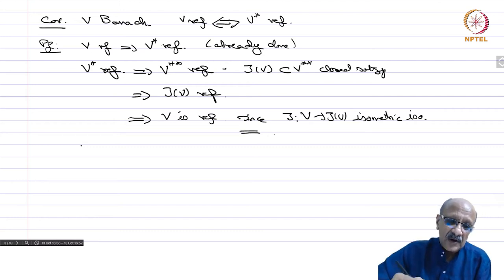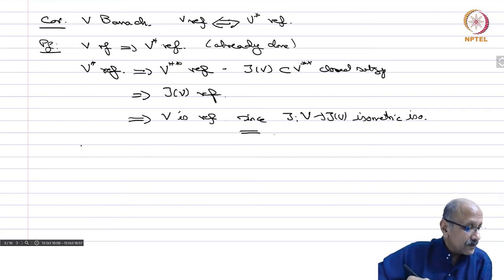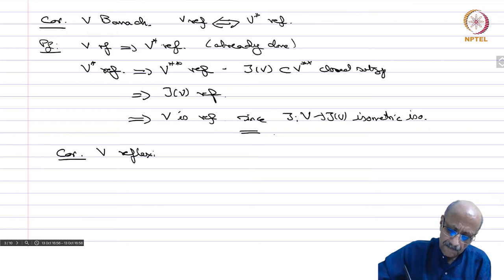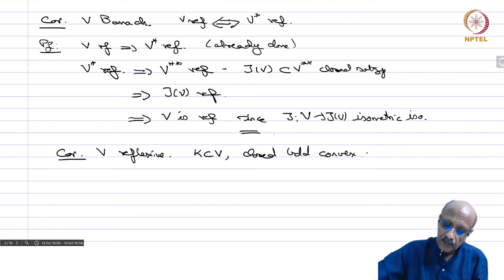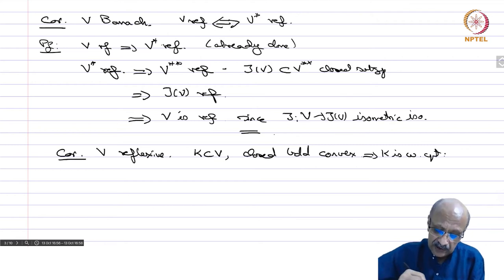For instance, we know that L1 is not reflexive because L-infinity star is not L1. So L1 is not reflexive, and therefore L-infinity cannot be reflexive either. Next corollary: V reflexive and K contained in V, closed, bounded, and convex, implies K is weakly compact. So it is not just the ball which is weakly compact — every closed bounded convex set is automatically weakly compact.